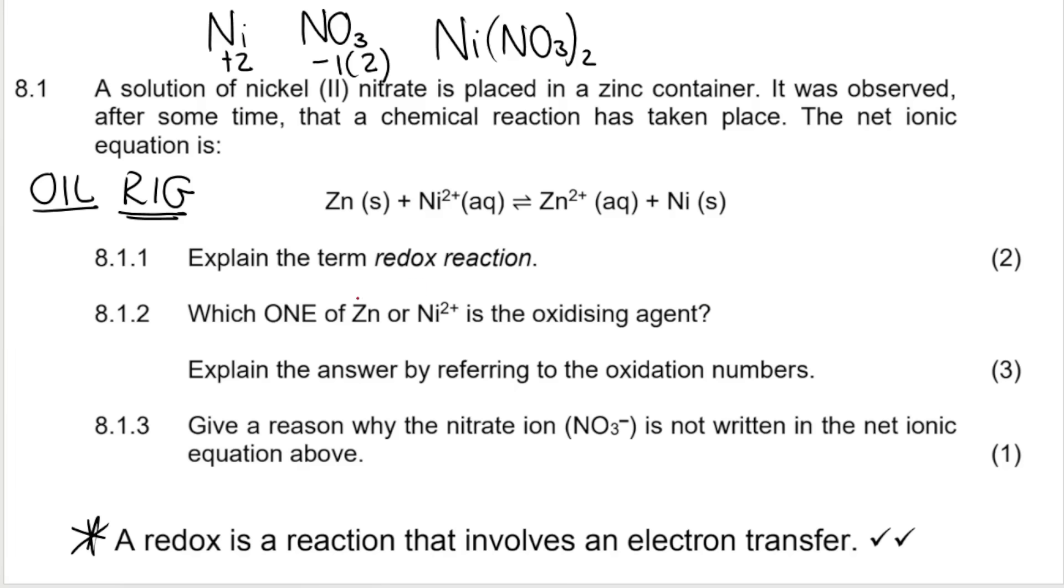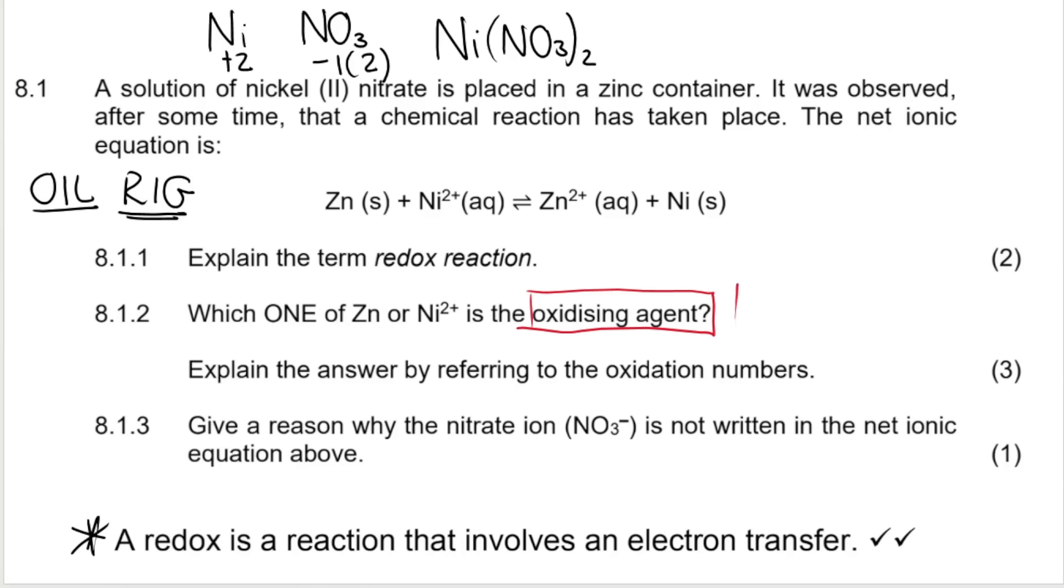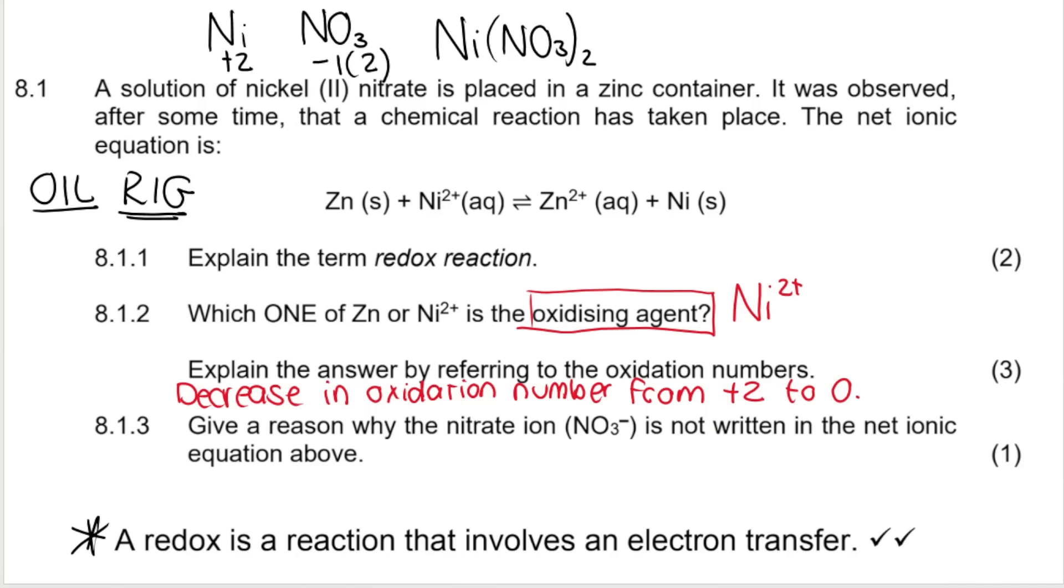So our question asked, which one is the oxidizing agent? Remember, if you are reduced, you are the oxidizing agent. So the answer is Ni²⁺. Zn has been oxidized, so it's the reducing agent. So who's the oxidizing agent? Ni²⁺, explained by referring to oxidation numbers. So we would say the oxidation number decreased from plus two to zero, just like that.